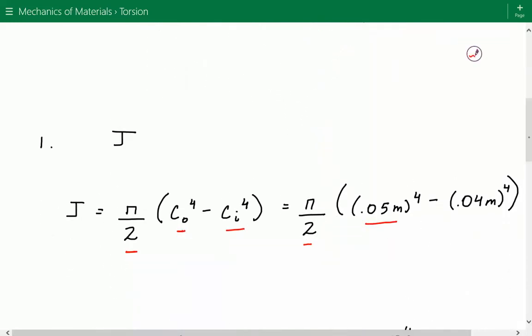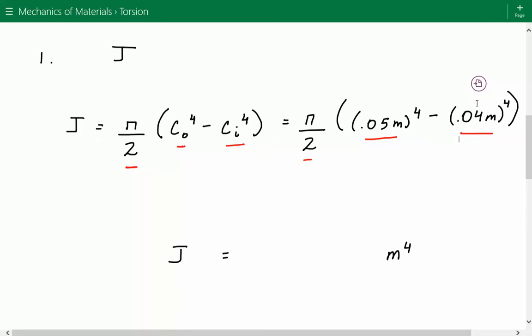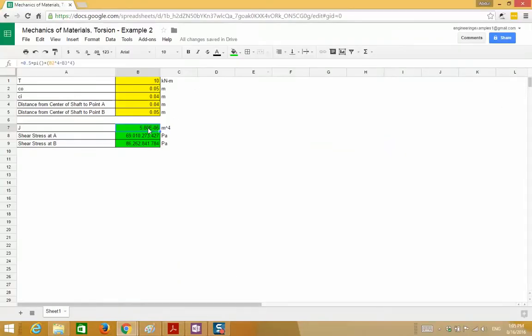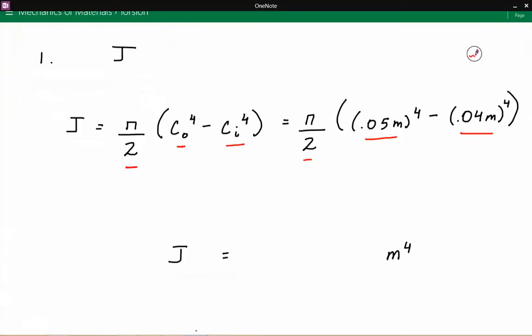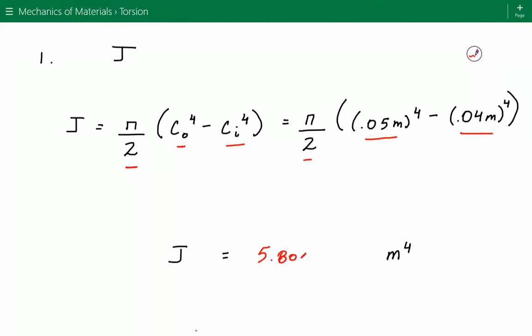So 0.05 m to the 4th power minus 0.04 m to the 4th power. I made a spreadsheet for this example, and J equals 5.8 times 10 to the negative 6 m⁴. You can get access to the spreadsheets at our website at engineeringexamples.net where we have all the spreadsheets for all the different examples.